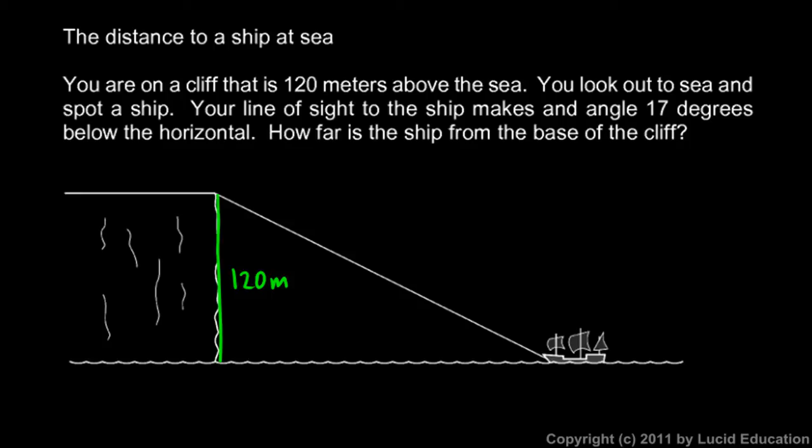And your line of sight to the ship makes an angle of 17 degrees below the horizontal. So this line right here is 17 degrees below the horizontal. So watch this. If you were right here, then from here, horizontal is right here. So I'm going to draw in this line horizontally. So this angle is the one that we're told is 17 degrees. And you should draw that on your diagram as well.